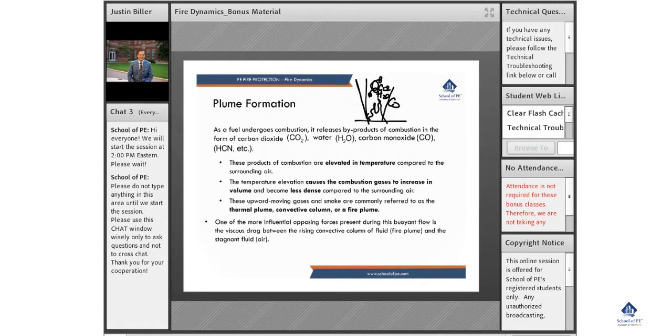as well as CO and other gases like hydrogen cyanide. All those are byproducts going into this plume. As combustion is occurring, that temperature is elevating because typically we're not having complete combustion.